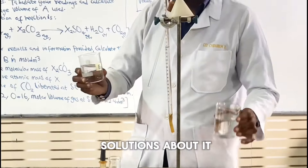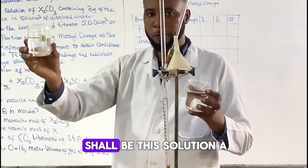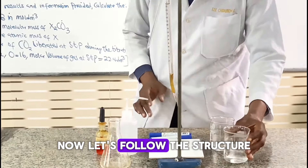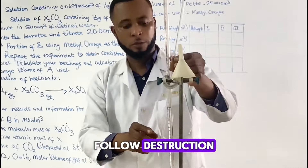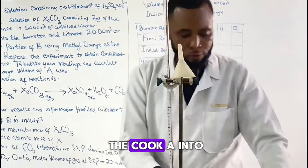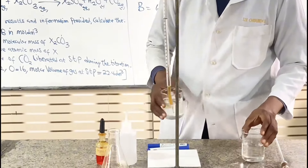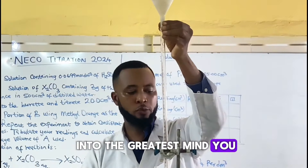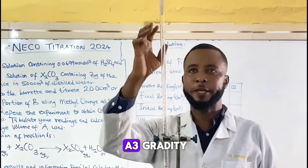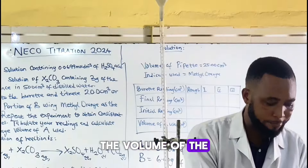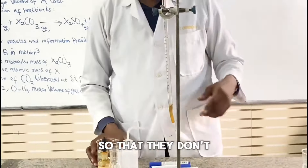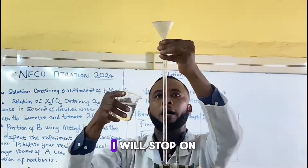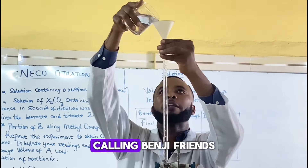Now, these are my solutions. I'm already preparing solution B and solution A. Let's follow the instructions. They said to put A into the burette. Now I'm putting A into the burette. Anytime you're putting A into the burette, take the volume of the base and compare it so that the whole experience will be the solution of B. I will start from zero.